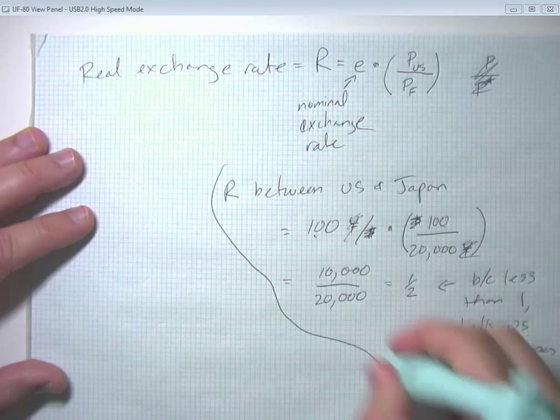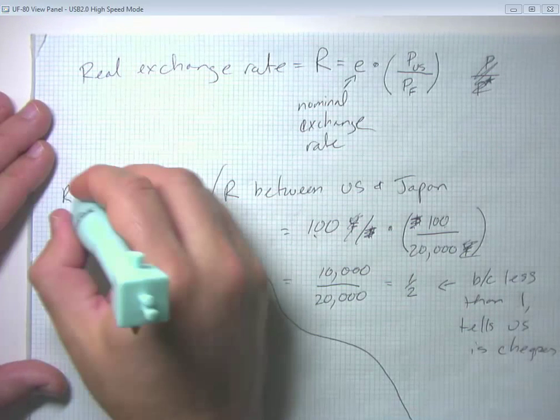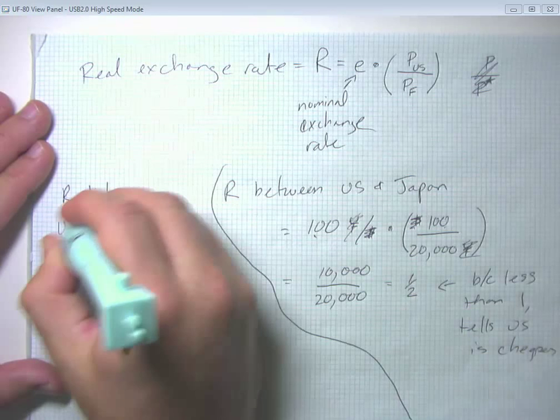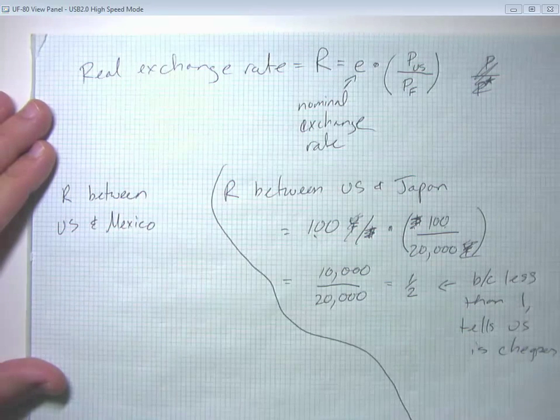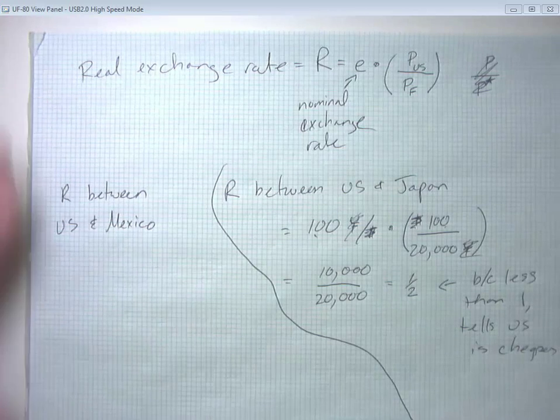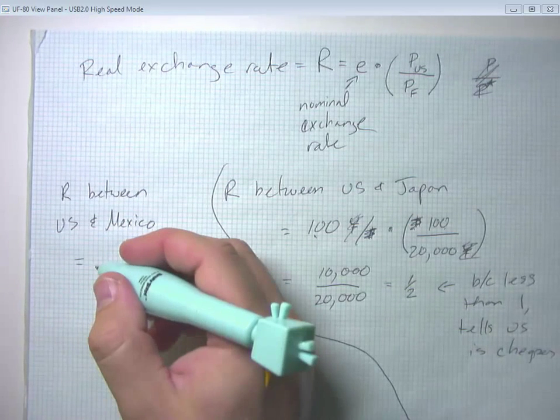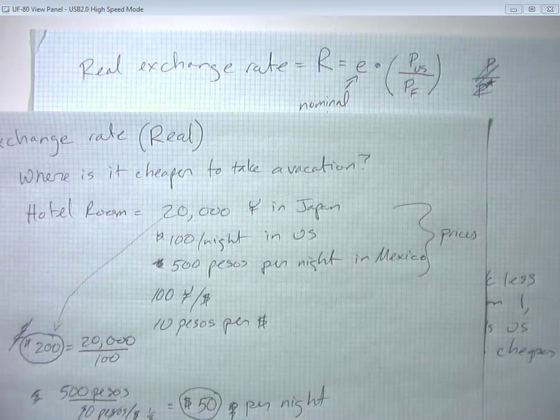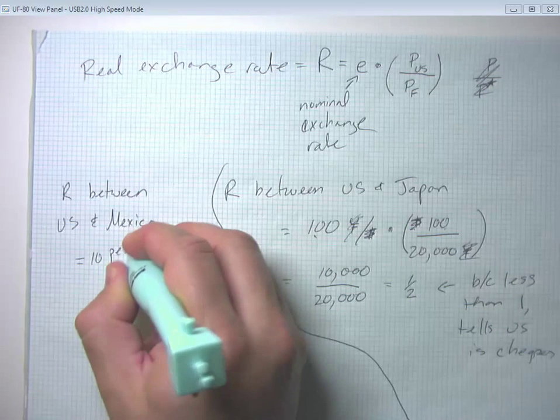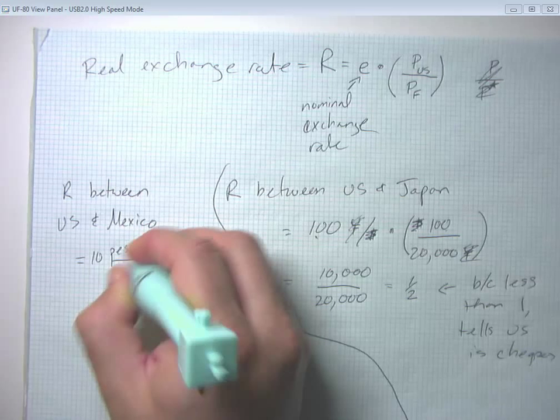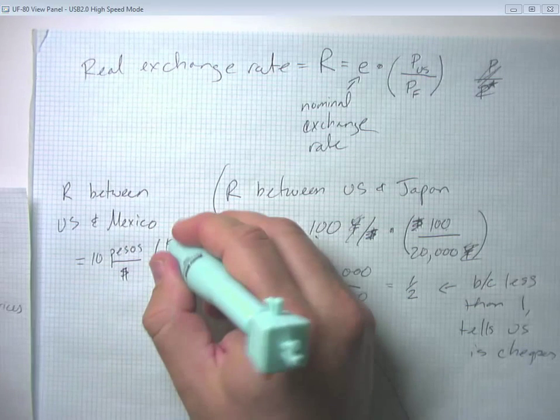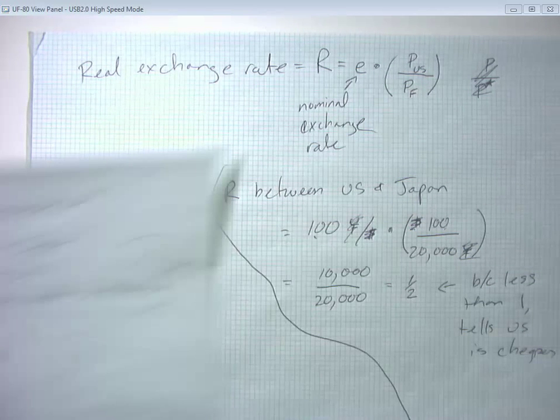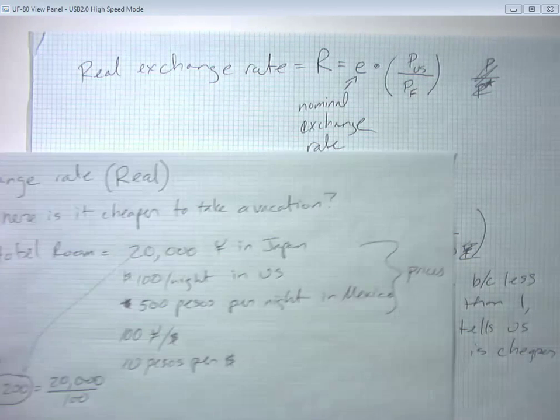So what about the real exchange rate between the US and Mexico? And in that case, we have the nominal exchange rate as 10 pesos per dollar. The US price was still 100 dollars. And the Mexican price was 500 pesos per night.